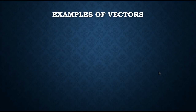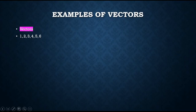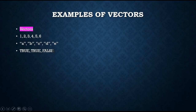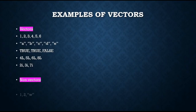Now let's see examples of vectors. This is a vector because it contains one dimension as well as a single type of data — all the data here is numeric. This is another vector with character data type, also in one dimension. This is a logical vector with only logical values in one dimension. This is an integer vector containing only integers. This is a complex vector. Now some non-vectors: this is not a vector because it contains two types of data — numeric and character.